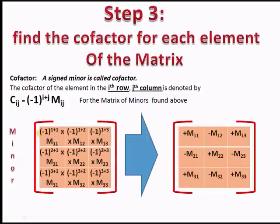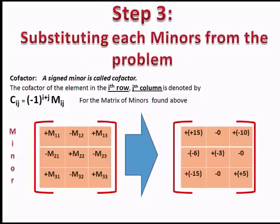Evaluating the signs: (−1)^2 is positive, so +M11; (−1)^3 is negative, so −M12; positive +M13; negative −M21; positive +M22; negative −M23; positive +M31; negative −M32; positive +M33. Applying these to our example using Cij = (−1)^(i+j) × Mij, the cofactor matrix values are: +15, −0, +(−10), −(−6), +(−3), −0, +(−15), −0, and +5.